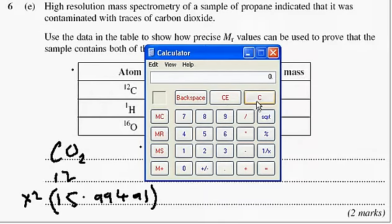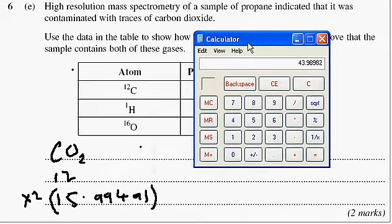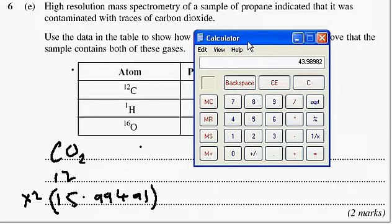Let's just clear it. So I've got 15.99491. I need two of these. And I need to add 12 to it. So what I've got, I think I've got the exact because it says it's high res mass spec.